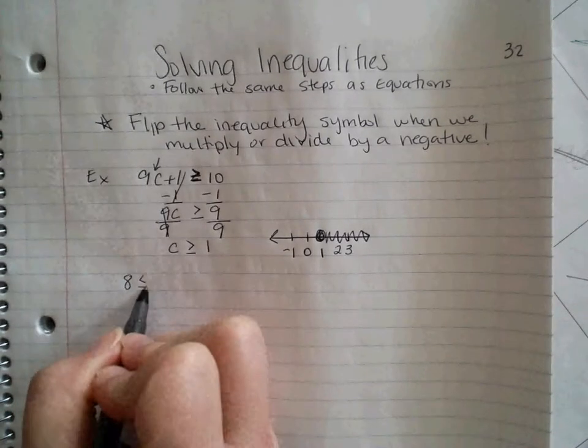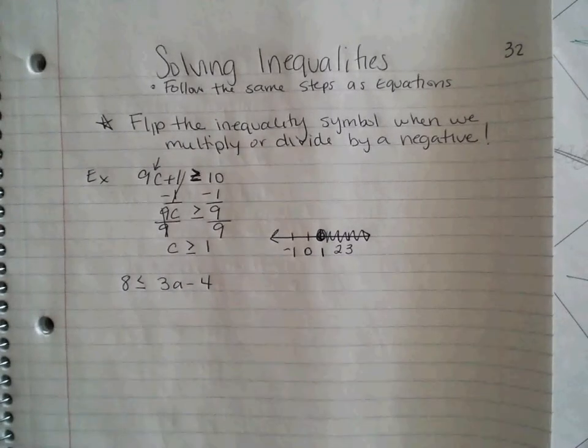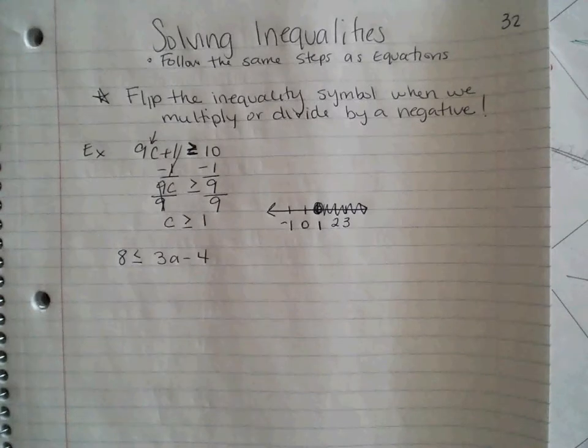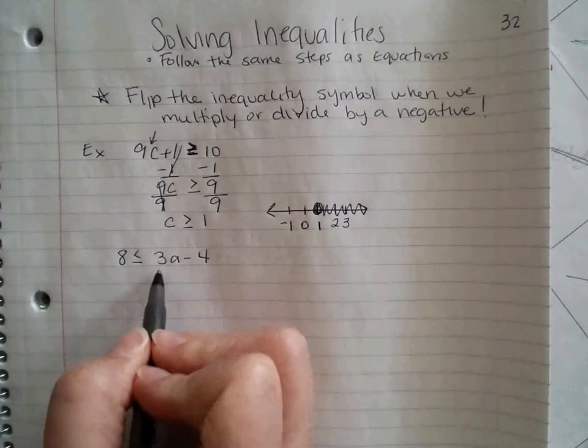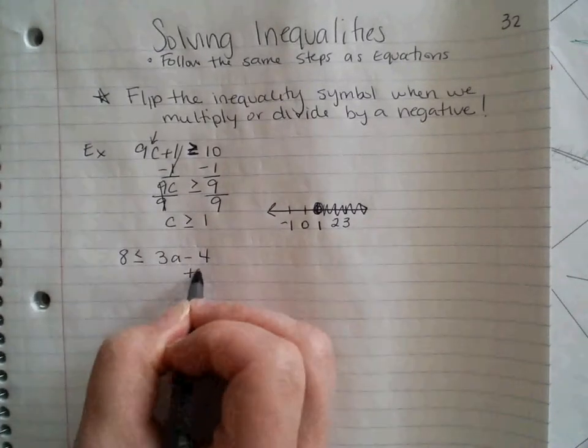Let's look at another one. So if I give you 8, it's less than or equal to 3a minus 4. If you want to start pausing the video, trying it on your own, and then watching me work this out, that would be great as well. So when I look at this, I'm going to save a by itself. So I'm going to minus 4. Opposite of minus 4 is plus 4.